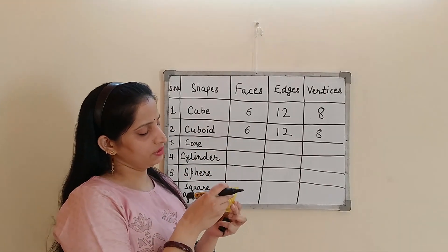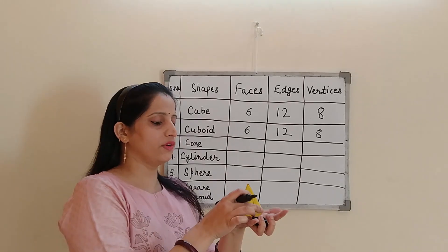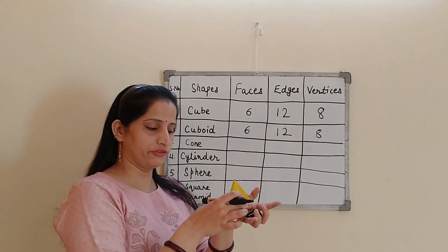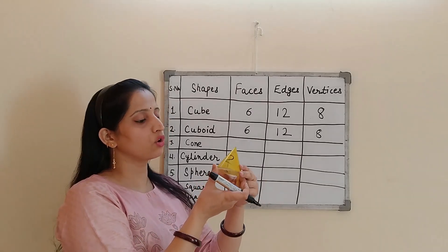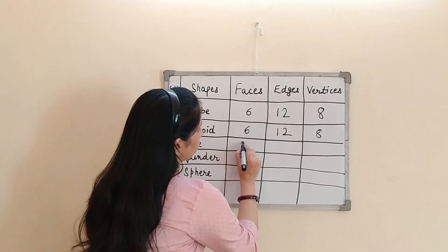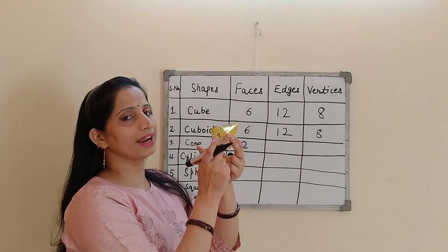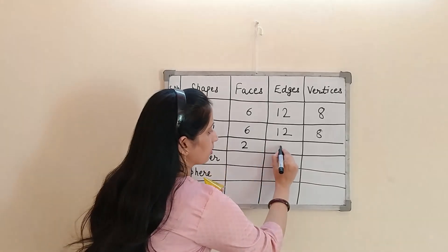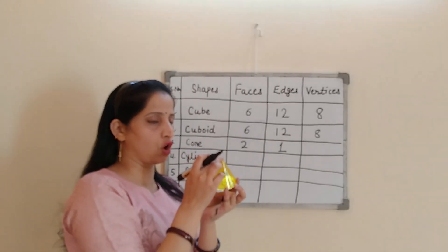So let's talk about the faces of cone. See, when we talk about the faces of cone, it is having two faces. One is flat face, flat surface, another is curved surface. So the number of faces in the cone is 1 and 2. When we talk about the edges, there is only one edge in this. And what this is? Only one vertex is here. This at the top.